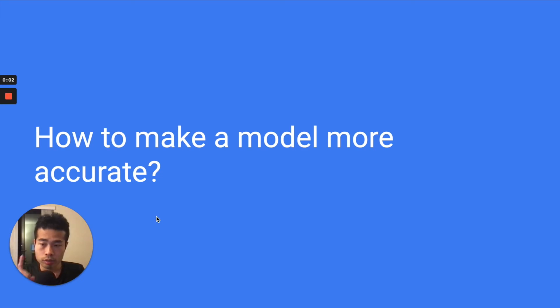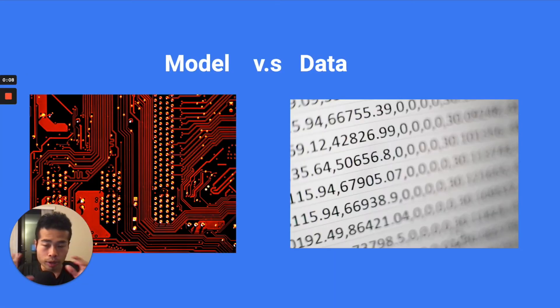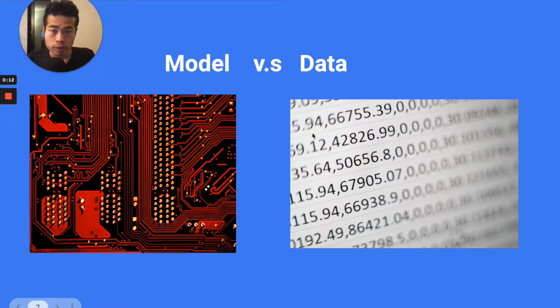Imagine now you have a task which is to make a model more accurate. What would you do? There are basically two categories of methods. First one is you improve your model, you improve your algorithms. Another one is you improve your data either by adding more training examples or clean your data. That's also what we call a data-centric approach. That's what Andrew Ng is actually strongly promoting.